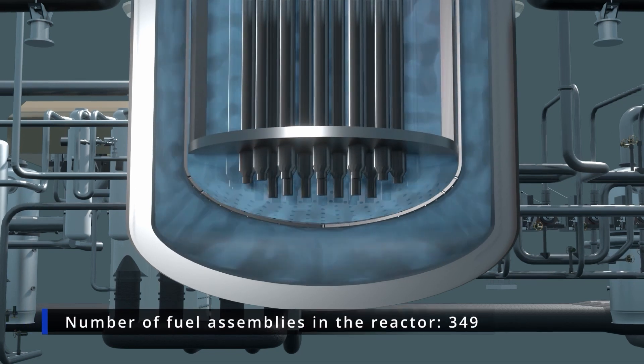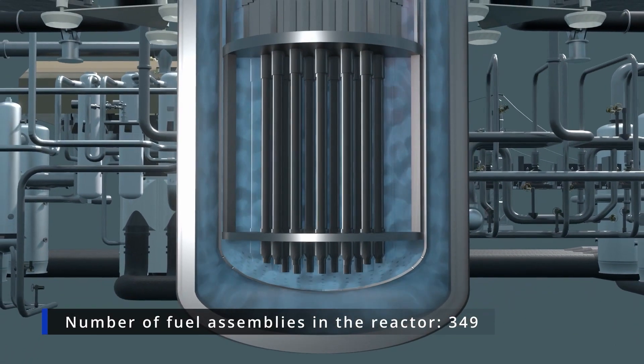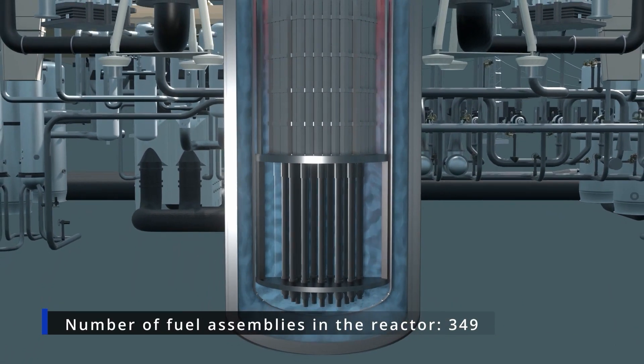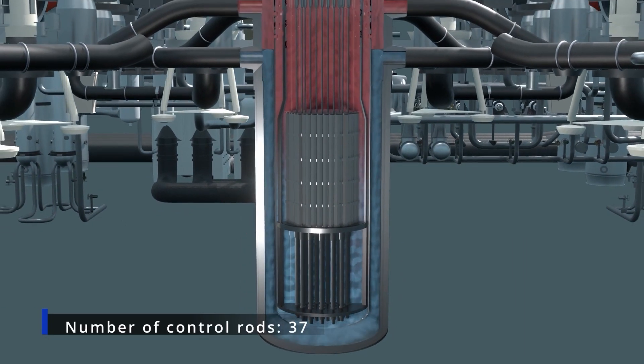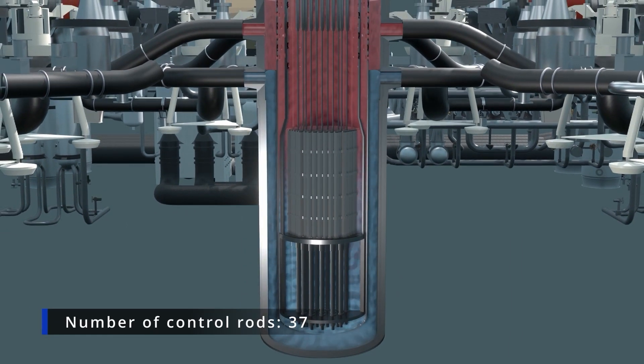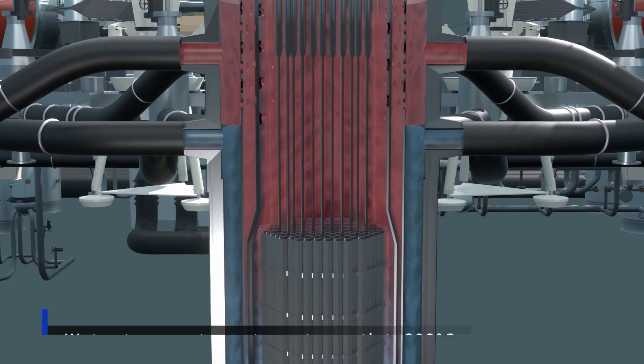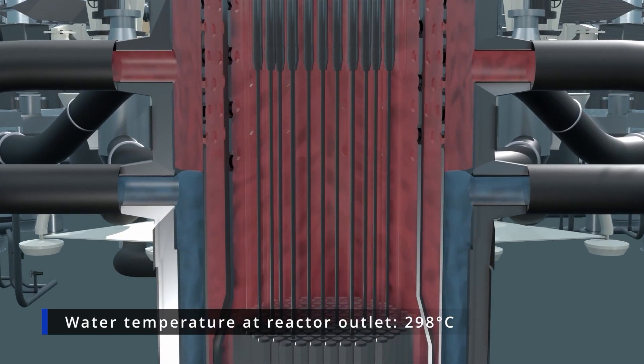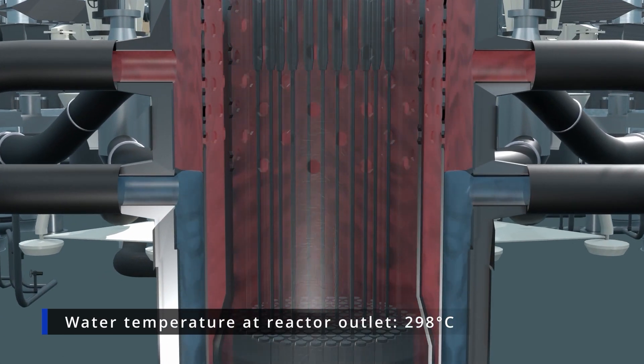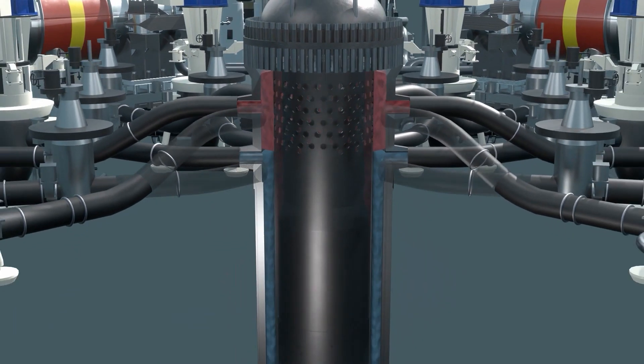It flows through the reactor core, which contains 349 fuel assemblies, 37 of which also have a boron steel superstructure. These control cartridges can be moved up or down in the core to increase or decrease the reactor's heat output. Heated water exits the reactor pressure vessel through the top spigot at a temperature of just under 300 degrees Celsius.